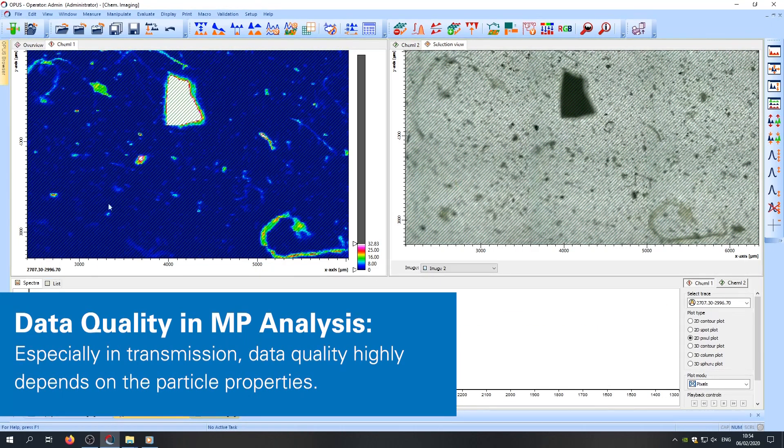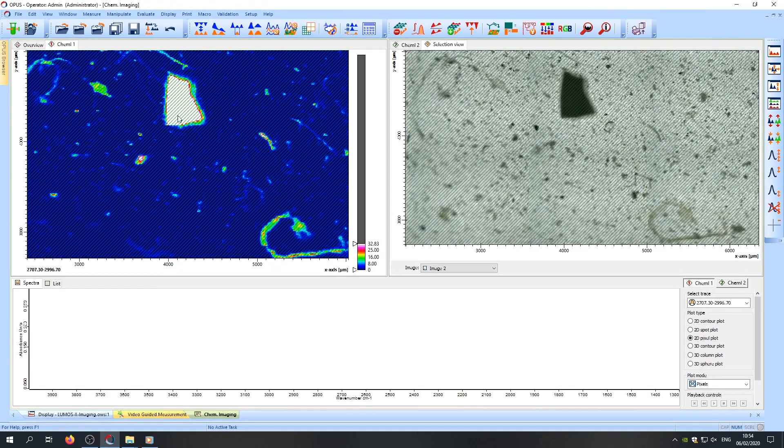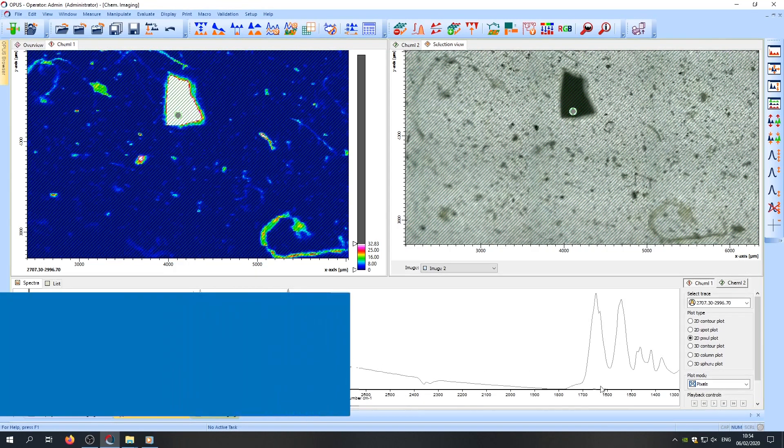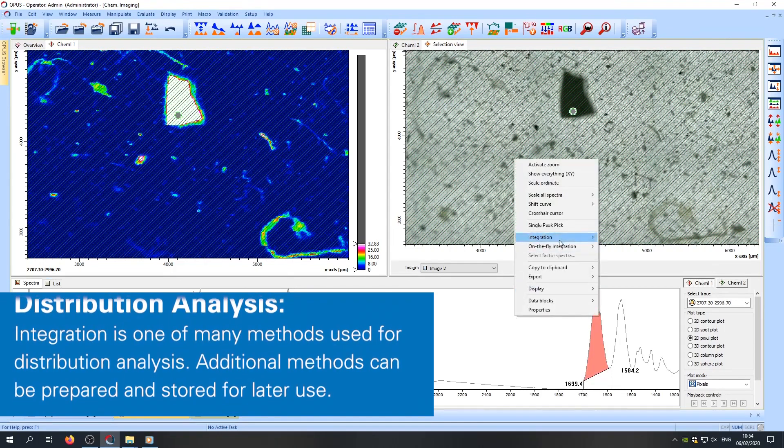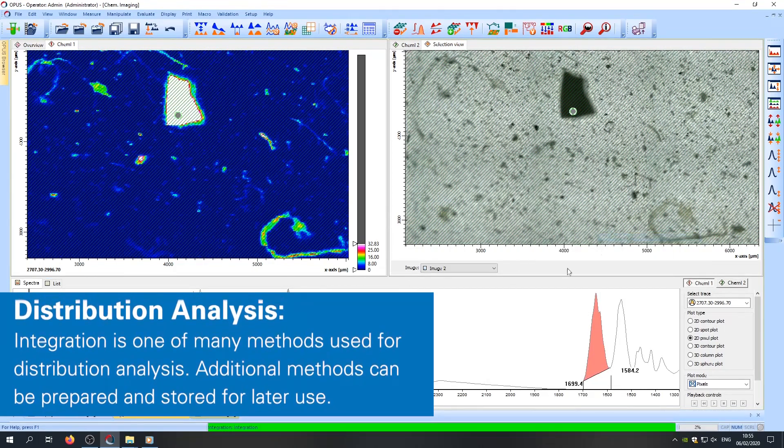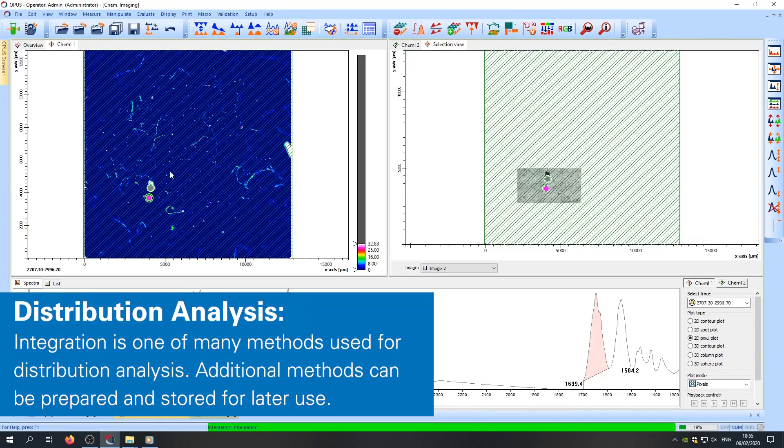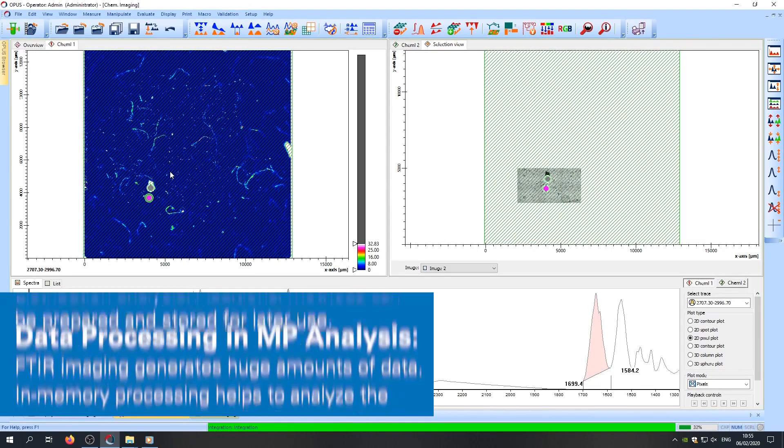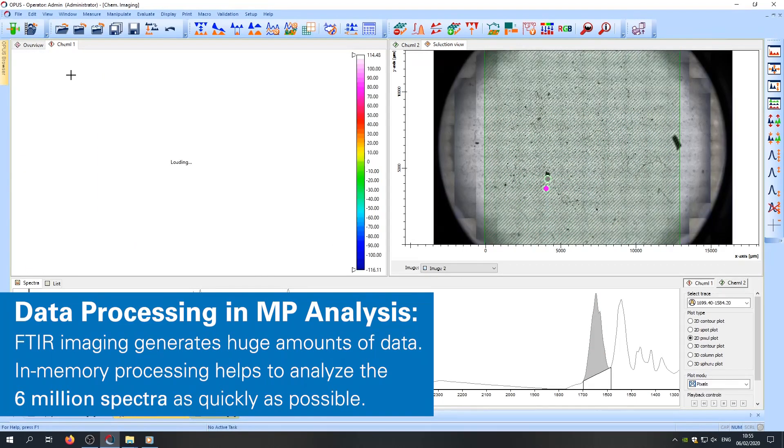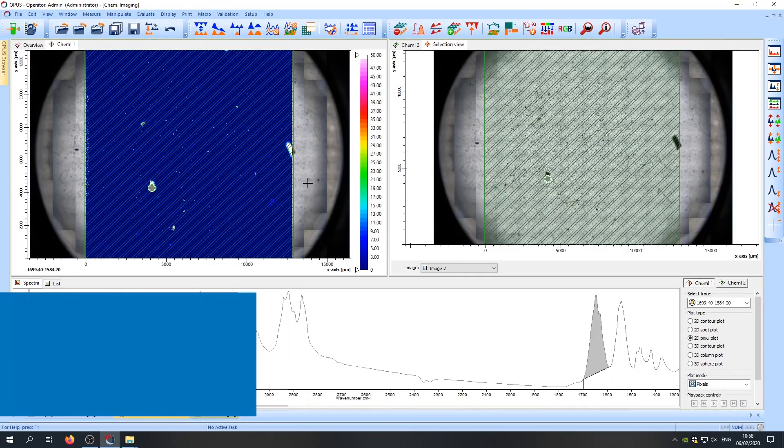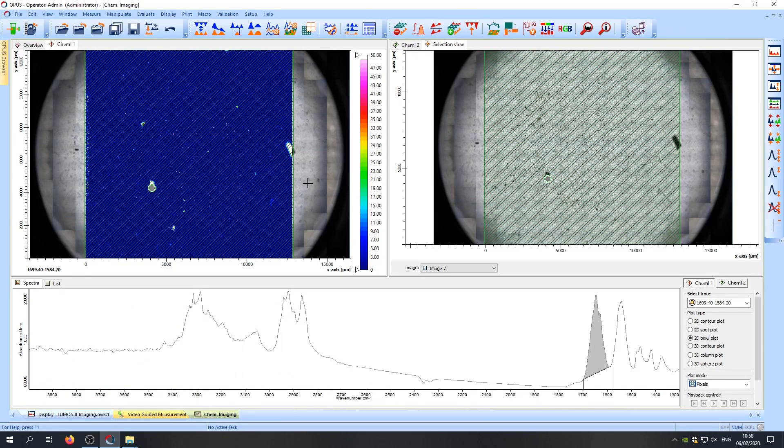If we now want to know the distribution of a certain type of polymer particle, we can just perform an integration by selecting a band that is specific for this polymer and start the integration, which you will see is also working quite fast, giving the number of spectra and the result will be shown in the chemical imaging window. We are now able to see the distribution of polyamide particles on the filter.